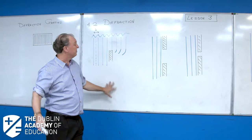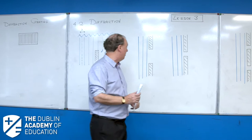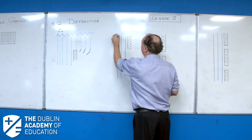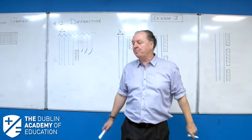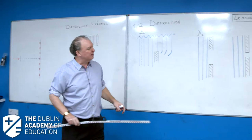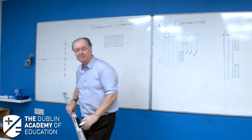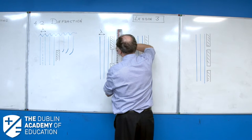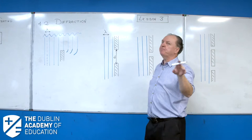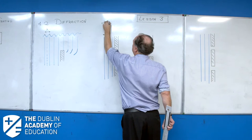Let's develop it a little bit further. Here's my water wave again — these are the crests, so the distance from crest to crest is the wavelength. I'm going to pass it through an obstacle with a little gap in it. Now look at the size of the gap — it's quite big compared to the wavelength. I'm going to call the size of that gap D. In this particular example, D is a lot bigger than the wavelength, so I'll write D >> λ.